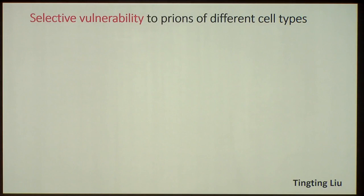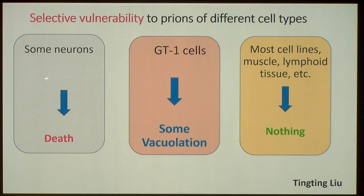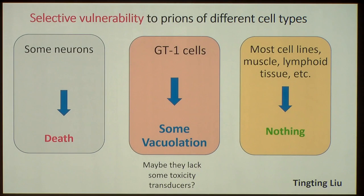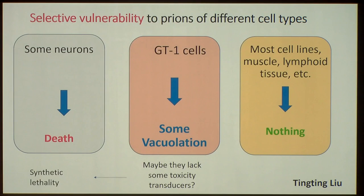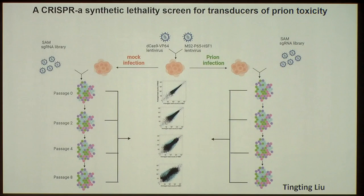Now let me tell you something about selective vulnerability. If you infect neurons with prions, the neurons die. However, if you infect most cell lines or many other tissues with prions, they can accumulate a lot of prions but nothing happens. The idea then was: maybe there are toxicity transducers that are lacking from continuously growing cells but present in neurons. Can we find a way to look at these factors? What I thought was synthetic lethality — perhaps prions are only toxic together with the expression of something else. This was the work of Tintin Liu, who did a synthetic lethality CRISPR activator screen.